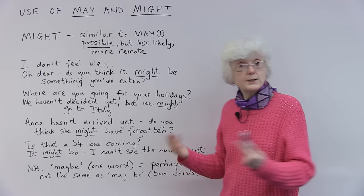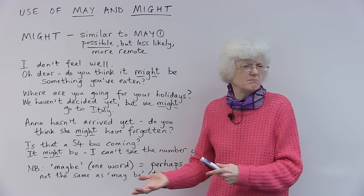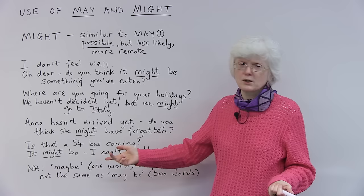Another example. You're waiting for your friend to arrive. Anna. Anna hasn't arrived yet. Do you think she might have forgotten the arrangement to meet? Do you think she might have forgotten? It's not like her to forget. So there's a lot of doubt there. She might have forgotten, but hmm.